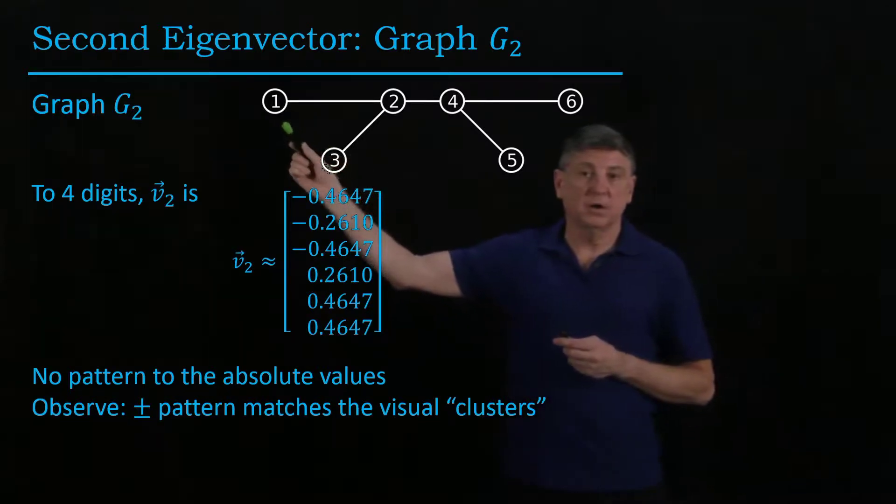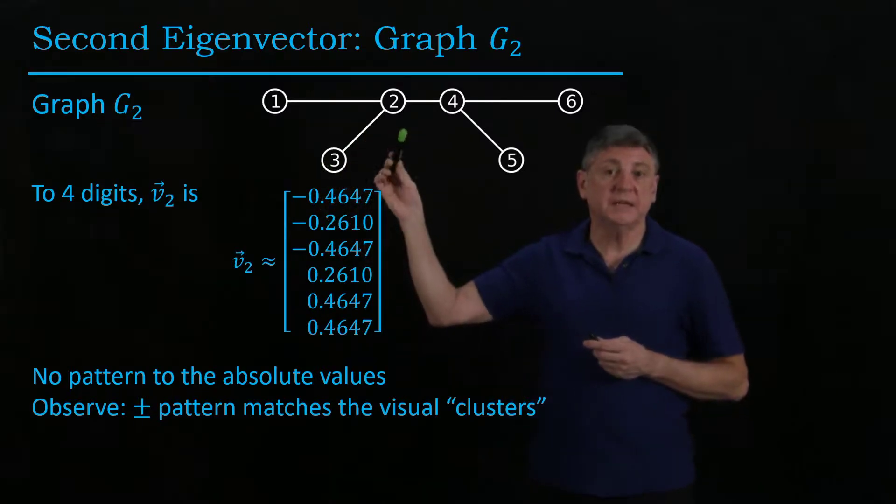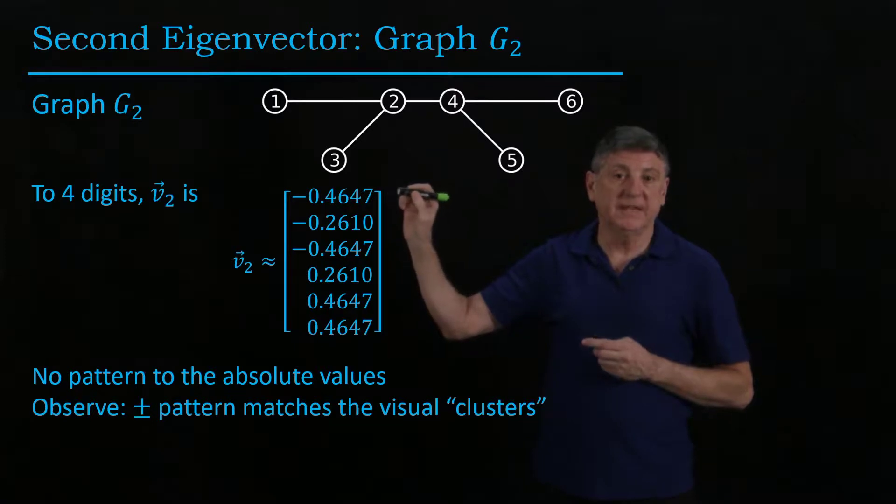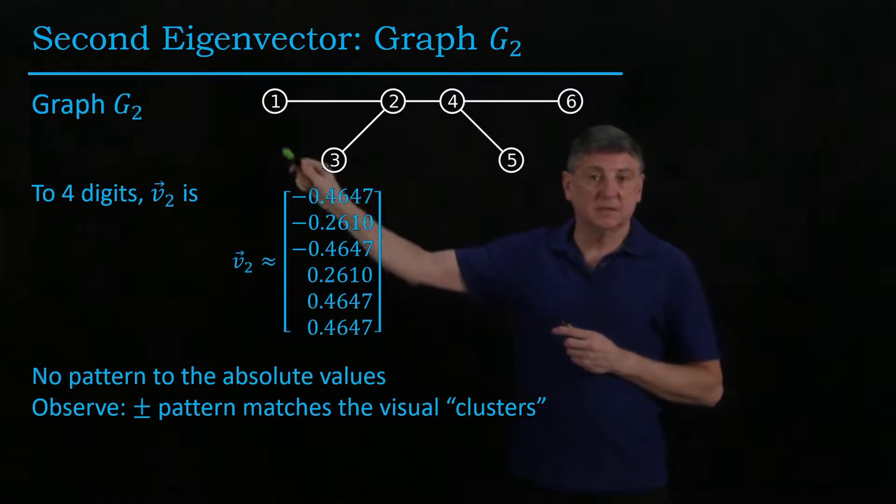And those are these. And so what we're seeing is that the negative entries of the second eigenvector are corresponding to this cluster.